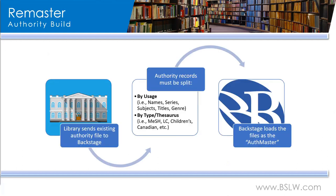When a client sends their authority file for a remaster service, in order to build the auth master, we need to receive the authority files split in a couple of different ways, and the ways the file is split depend largely on the ILS that you are using. For example, if your ILS indexes authority records for names, subjects, series, titles, and genre all separately, we need to make sure that we keep the indexing the same on our end. So we would need to receive five separate authority files, one for each usage.